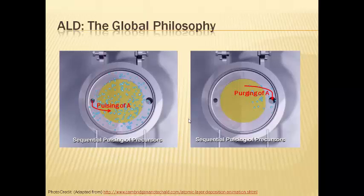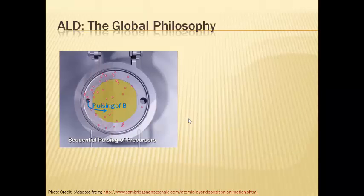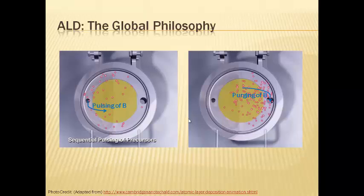As we shall understand better in a future slide, the precursor becomes excess when the first layer becomes saturated, leading to self-limiting single atomic layer growth. This is followed by pulsing precursor B and again pumping it out in a similar fashion.